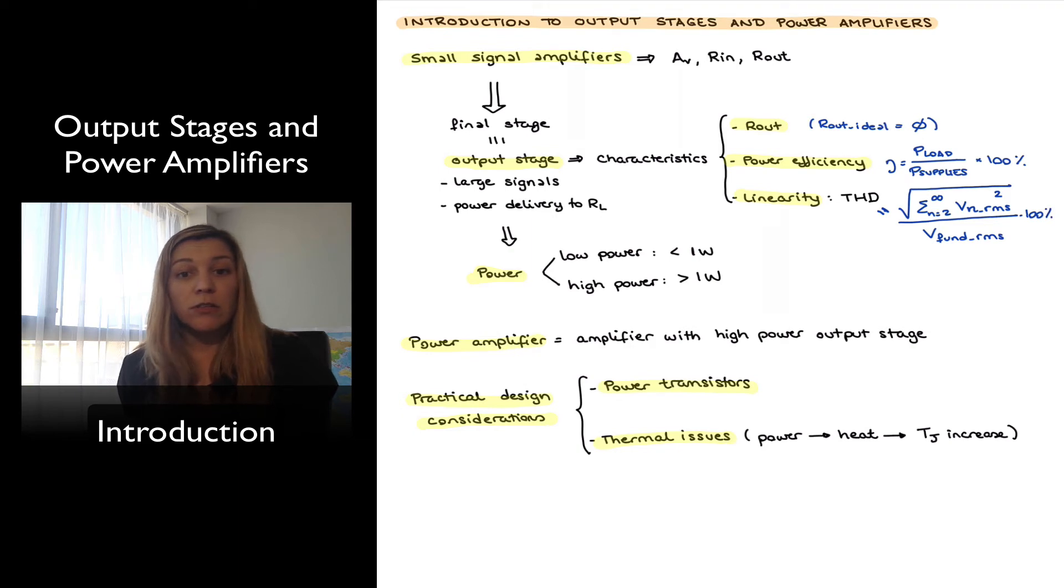If we look at the data sheet for a regular transistor we will see that there is an absolute max characteristic for junction temperature typically in the order of 150 to 200 degrees Celsius and so if we increase our junction temperature beyond the maximum allowed junction temperature we risk causing permanent damage to our transistor, essentially destroying our transistor.